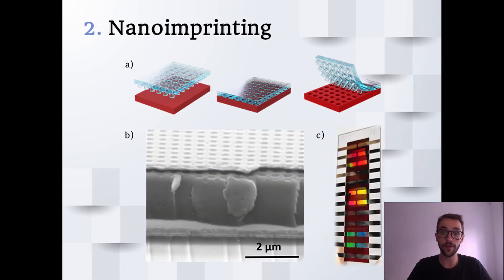We wanted to keep everything roll-to-roll compatible, so we decided to use nanoimprinting lithography to generate the nanostructured photonic crystal on the back electrode.